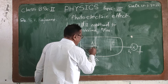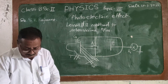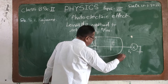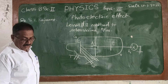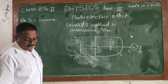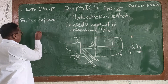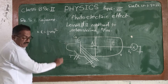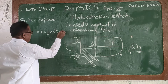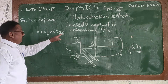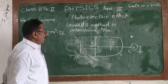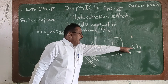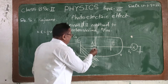Due to the application of accelerating voltage φ, the photoelectrons gain kinetic energy and are accelerated toward plate P1. The plate P1 is connected to electrometer E1, and we observe deflection in the electrometer.